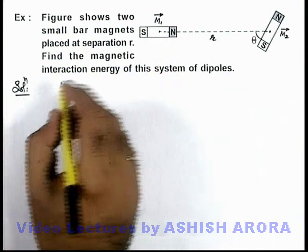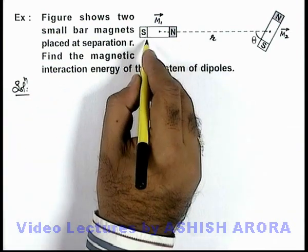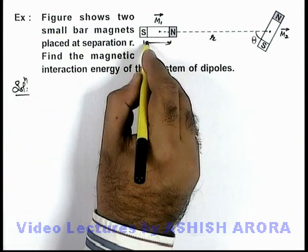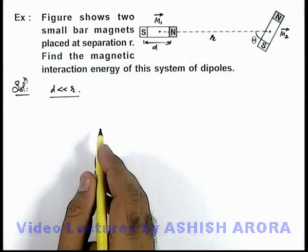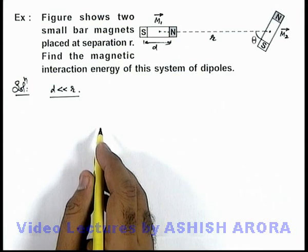In solution, the very first thing we can treat is that the separation between the poles, if this is d, then d is very much less than r, because these are treated as dipoles and these are very small bar magnets.